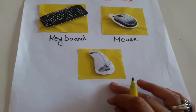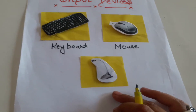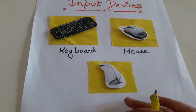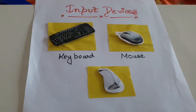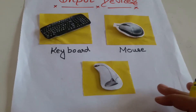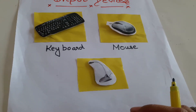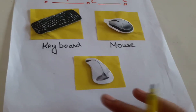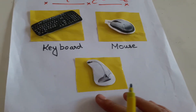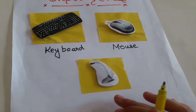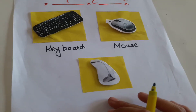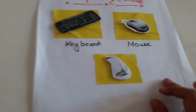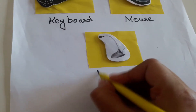Which device is this? Don't get confused children. This is microphone. We use this — microphone is used to record your voice. Whatever voice you want to record, it can be used for recording your voice. We can use microphone. This is also an input device. This is microphone.